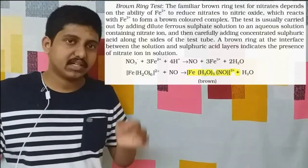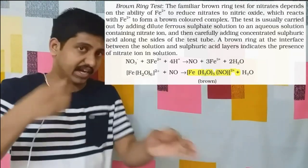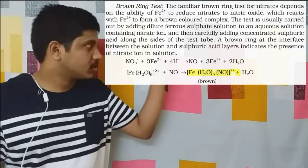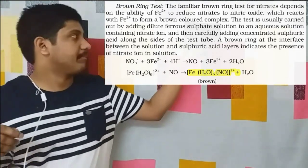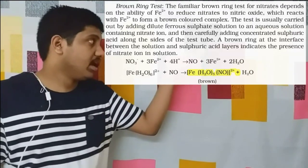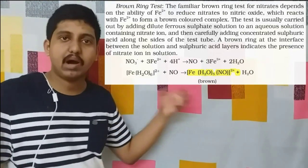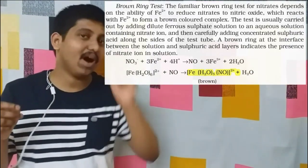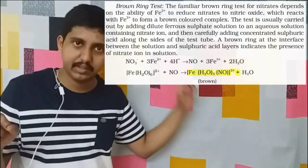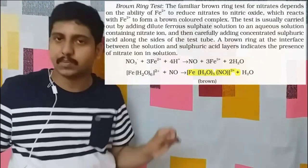The nitrate ring test — important for exams: we add ferrous sulfate solution to the solution containing the salt and add sulfuric acid. At that time, a brown ring is formed. What happens is that NO3⁻ combines with Fe²⁺ in the presence of H⁺ to produce Fe³⁺ and form our nitrate ring complex.